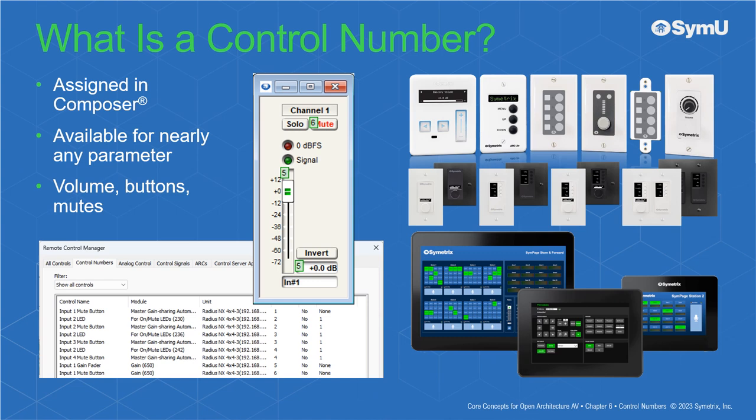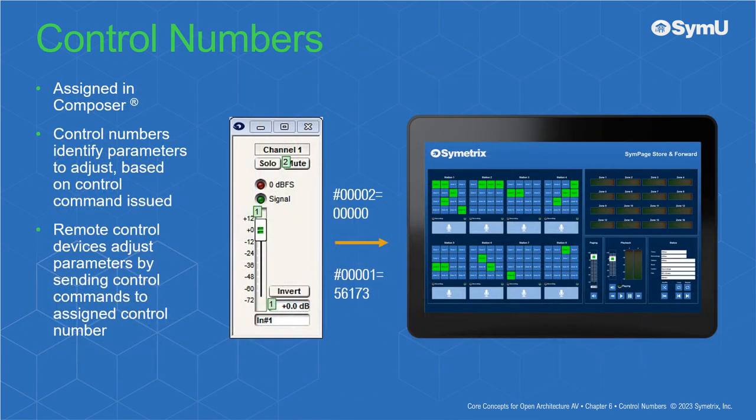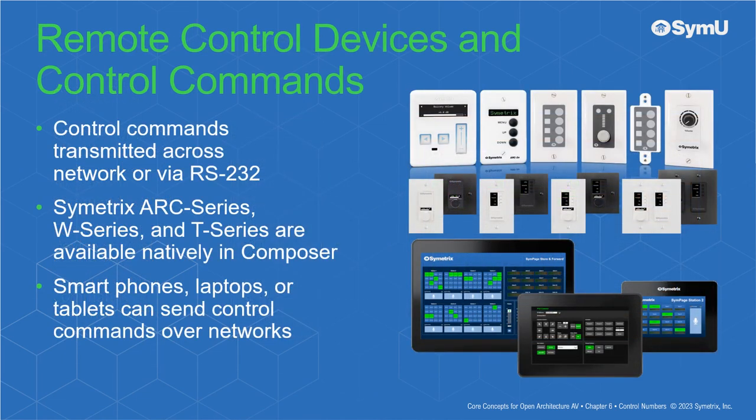Nearly any parameter, such as volume and buttons, within Composer can be assigned a control number. Composer uses control numbers to identify which parameter to adjust based on the control command issued by the remote control device. Any device, such as a smartphone, laptop, or iPad that has the ability to send control commands across a network or via RS-232, may be used as a remote control.